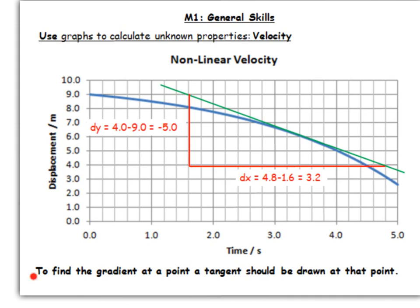So as I say at the bottom here, the key thing here is if you want to find the velocity at a certain point, you need to draw a tangent to the graph at that point. So that's this green line here. Essentially it's a line that has the same gradient as the graph at the particular point.